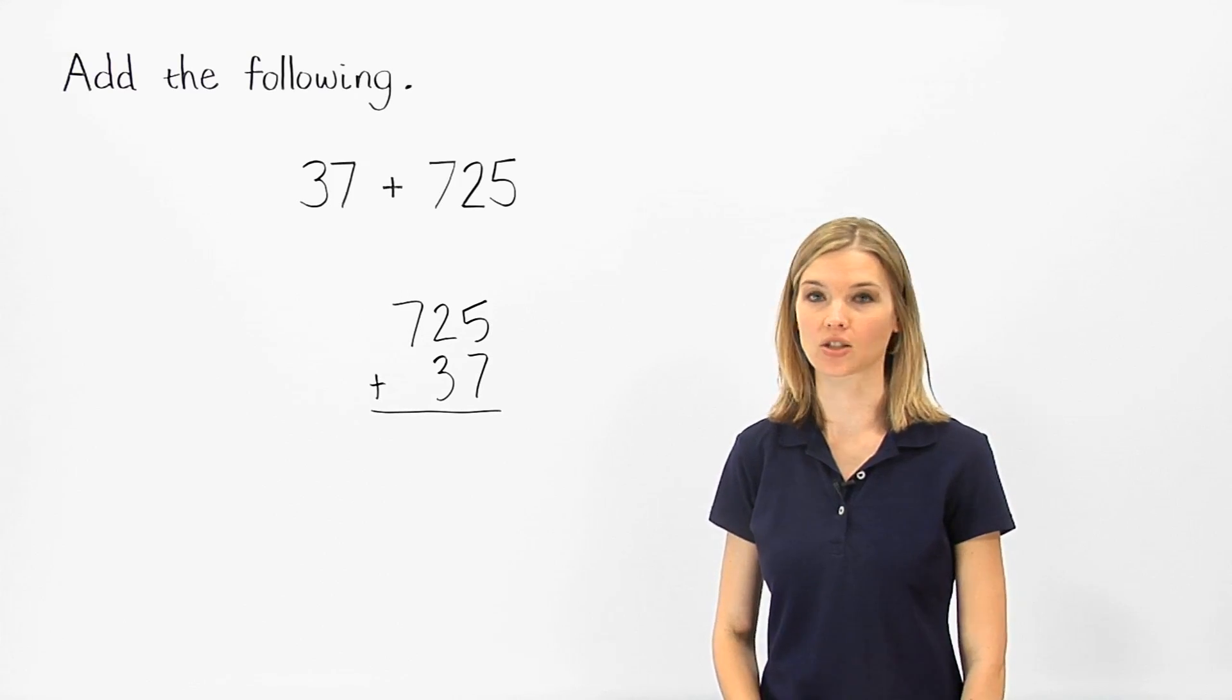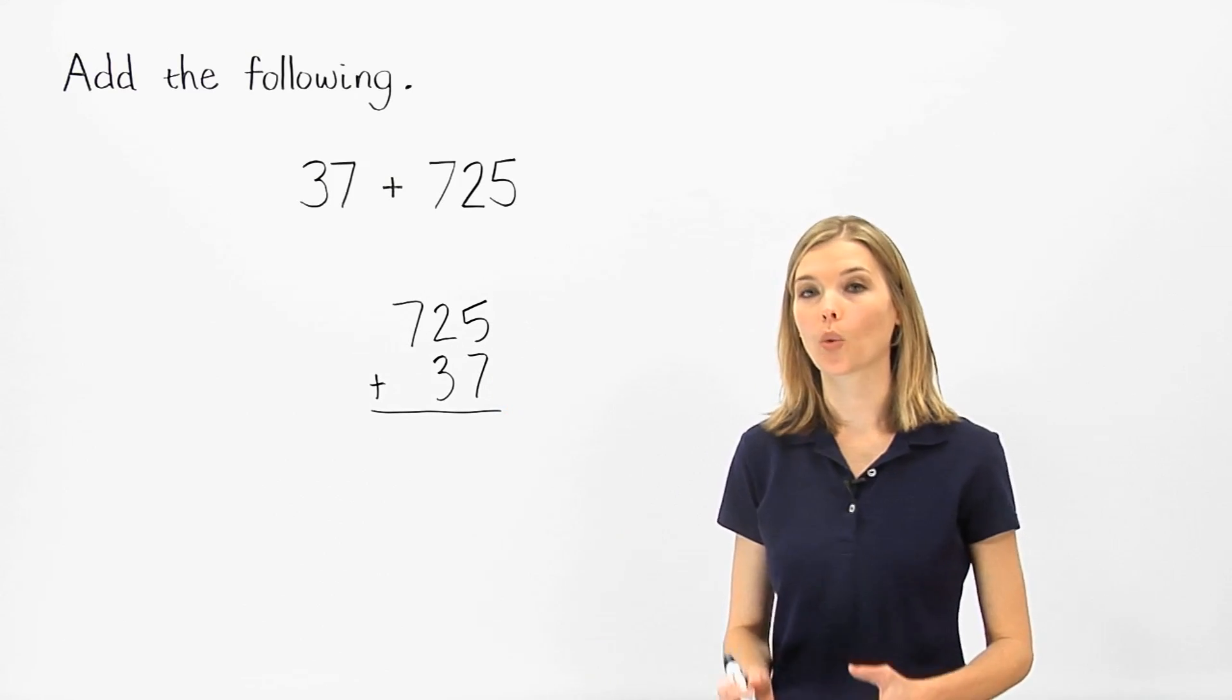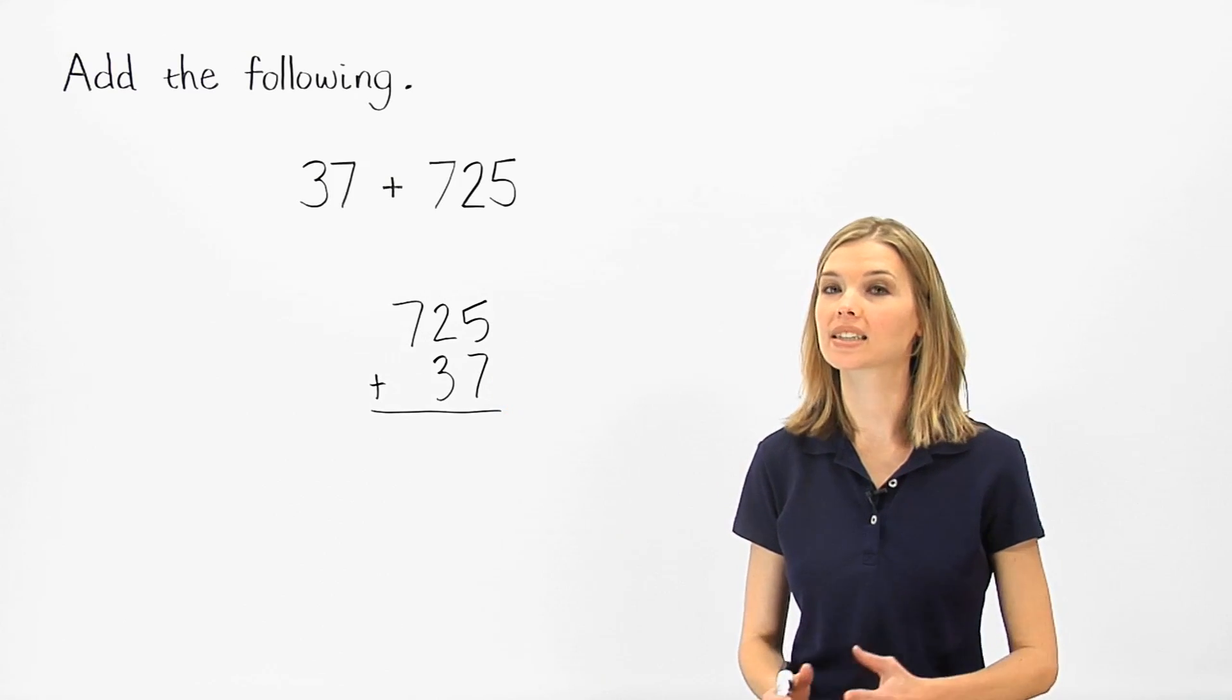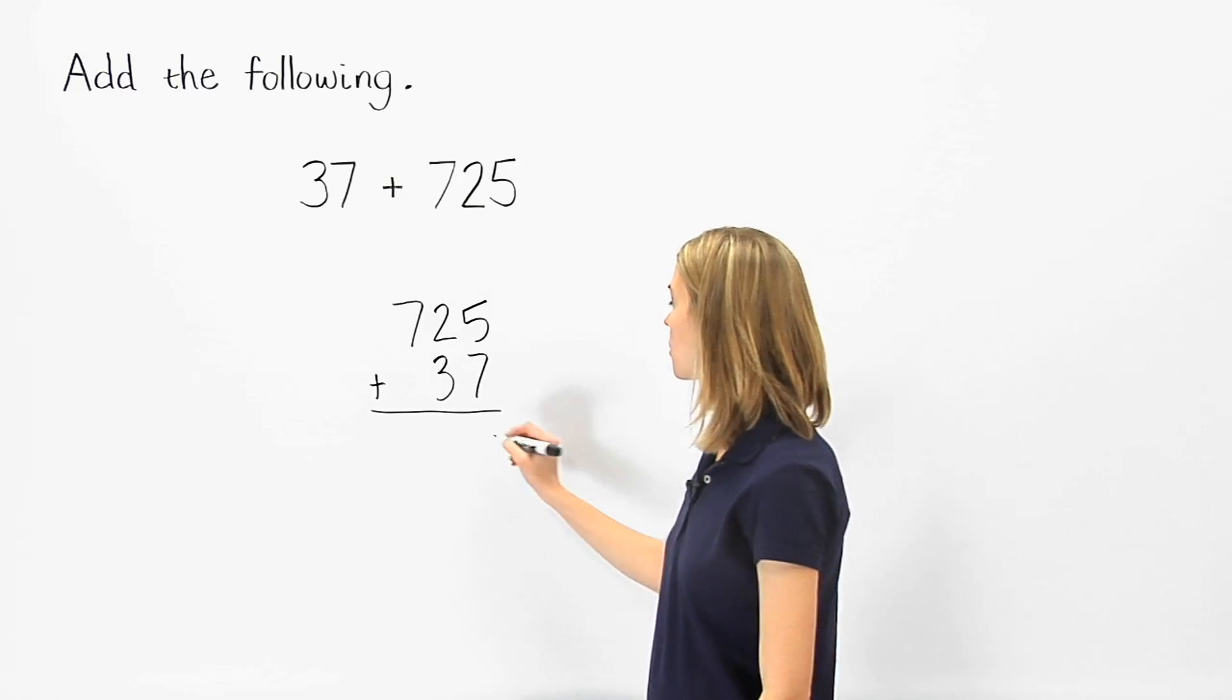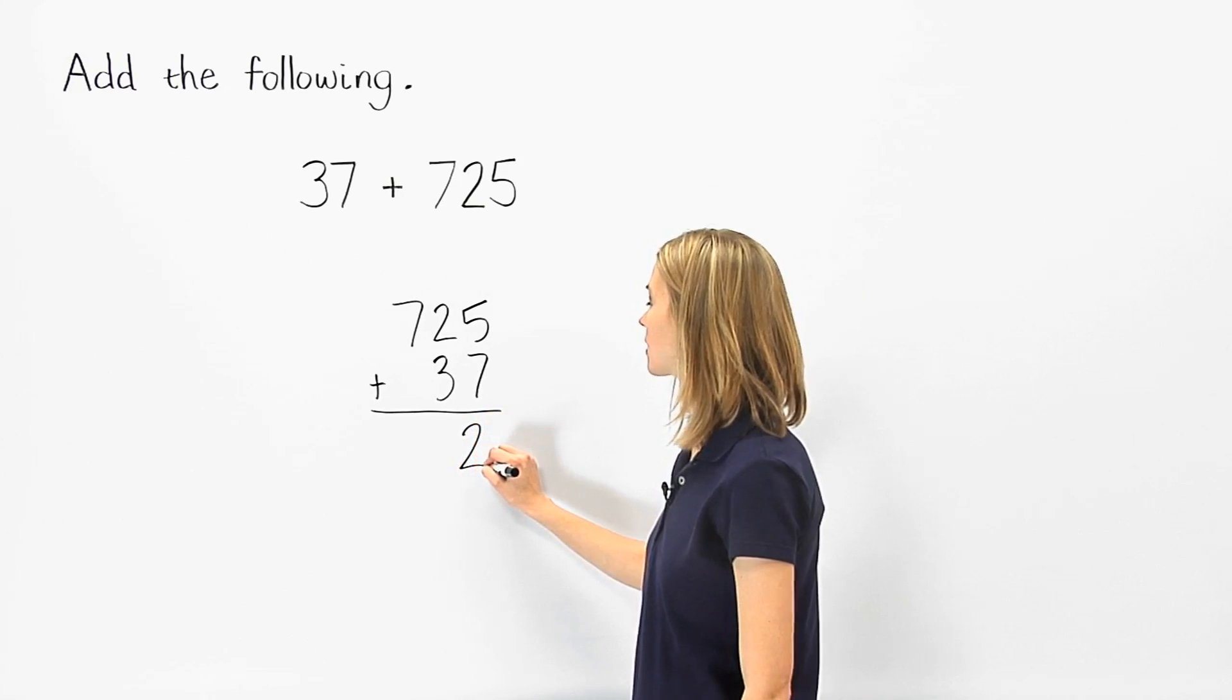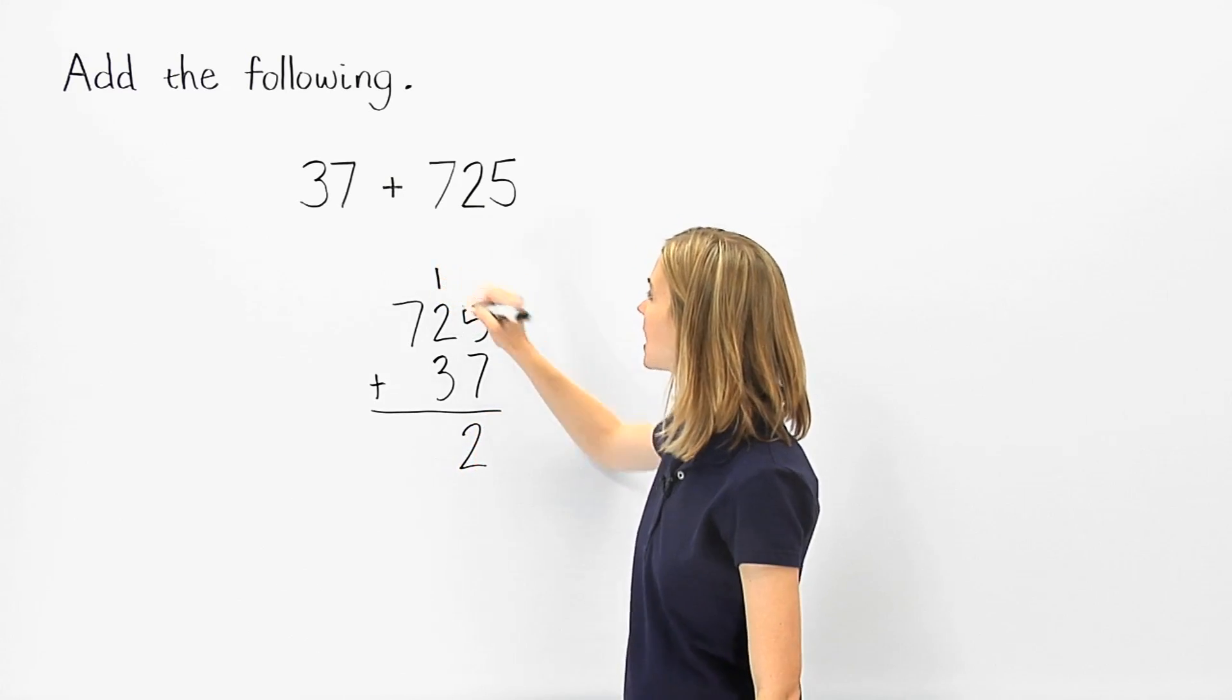Next, we add the units digits. Five plus seven is twelve. And remember that twelve can be thought of as one ten and two units. So we put a two in the units column of our answer and carry the one to a position above the tens column.